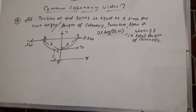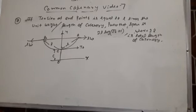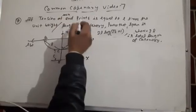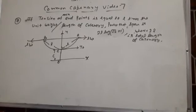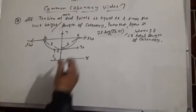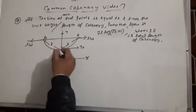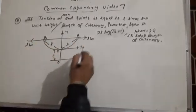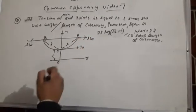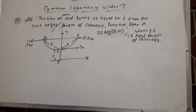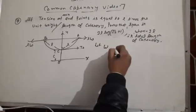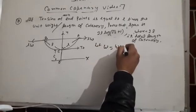Next question: If the tension at each endpoint is equal to l times the unit weight per length of catenary, prove that the span AB = 2l log(√2 + 1), where 2l is the total length of catenary. The catenary is ACB, total length 2l, and we need to find the value of AB.